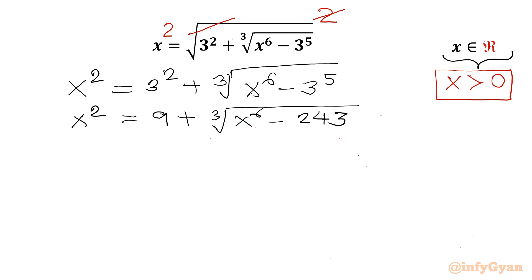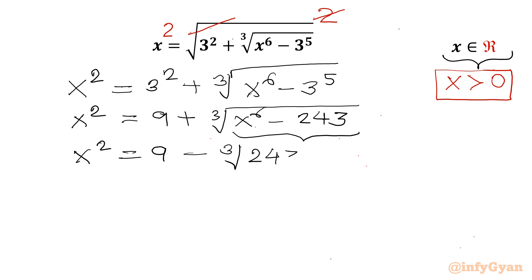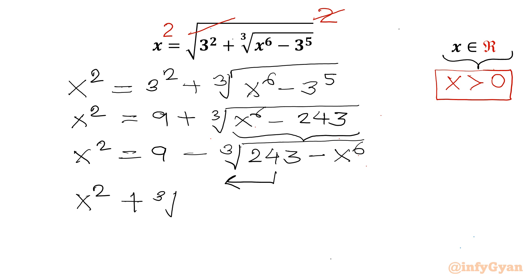Now I will take minus common from this radicand, so I can write x² = 9 − ∛(243 − x⁶). Taking the negative term to the LHS, the equation becomes x² + ∛(243 − x⁶) = 9.